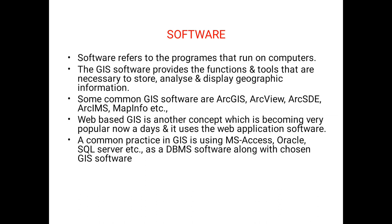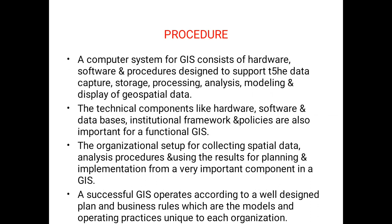As a DBMS software along with chosen GIS software. Next, coming to our third component: procedure. A computer system for GIS consists of hardware, software, and procedures designed to support data for capturing, storage, processing, analysis, modeling, and display of geospatial data. These three components work together to support our data activities. Technical components like hardware, software, and databases, as well as institutional framework and policies, are also important for a functional GIS.